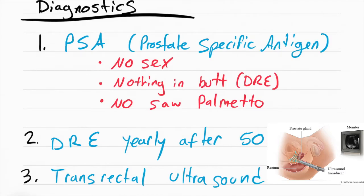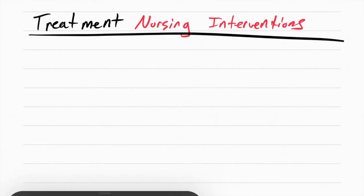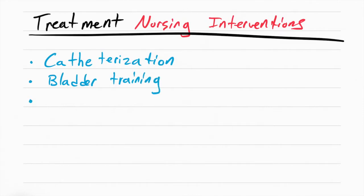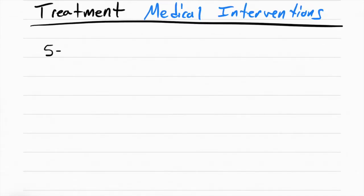The nursing interventions for BPH, really they're just nursing interventions for urinary retention. Essentially we have to catheterize them, that's the way we get the urine out. We can also do bladder training and we want to tell the patient to avoid irritants to the bladder like caffeine, spicy food, and soda.